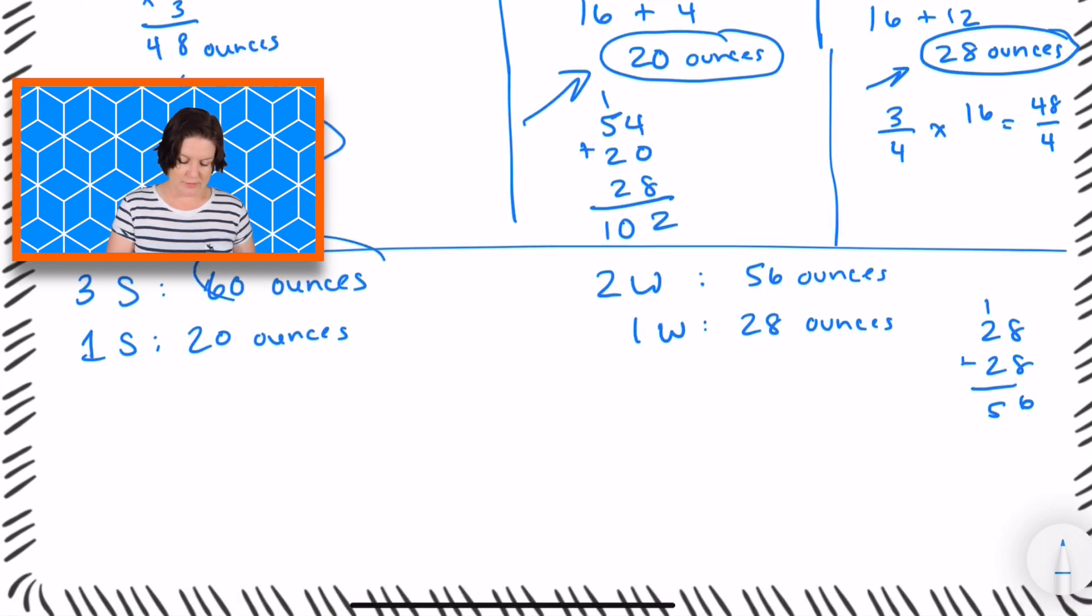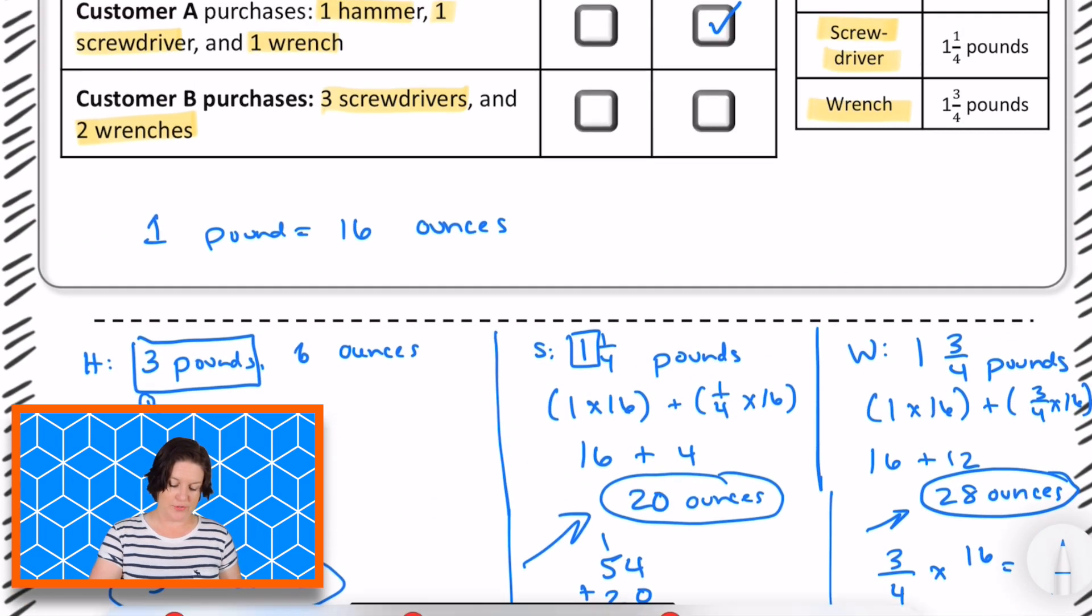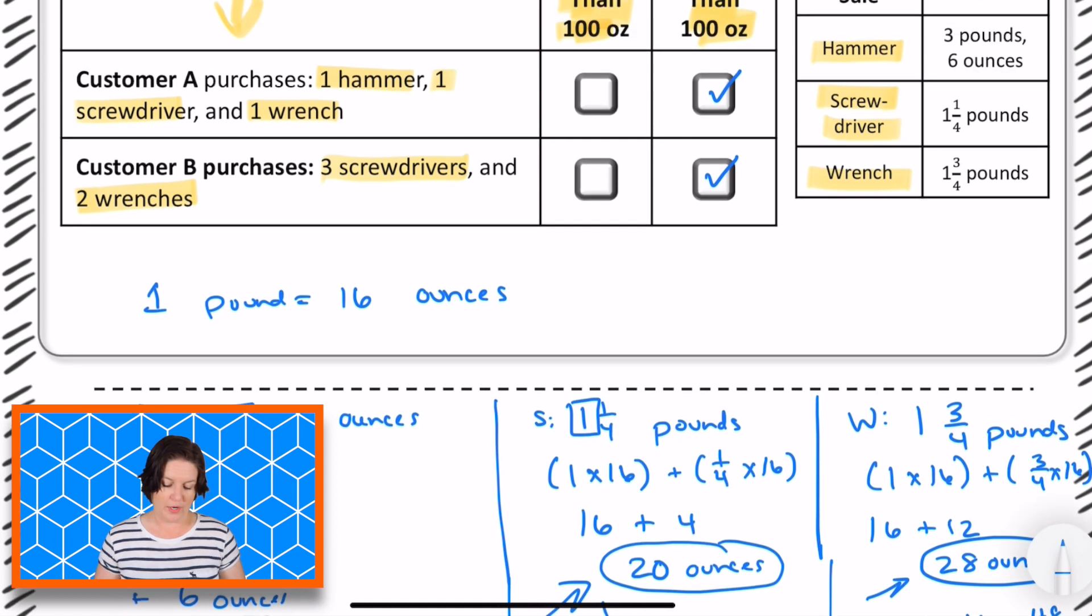Alright. So let's join those two amounts together. 60 ounces plus 56 ounces is 116 ounces. So that is also greater than 100 ounces.